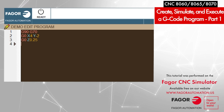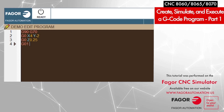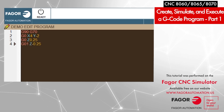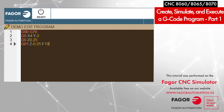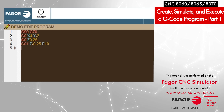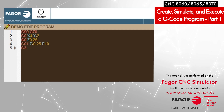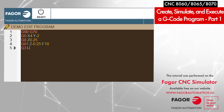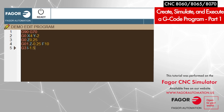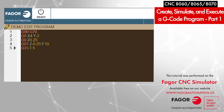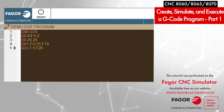I press Enter, then program G01 Z-0.25 to plunge into the part at a feed rate of 10 inches per minute. Next, I program a circular path using G3 I-1.5. This command makes the tool follow a complete circular path and return to the same point at a feed rate of 20 inches per minute.